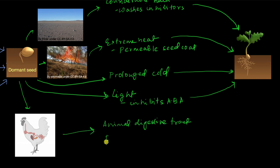So what happens in an animal digestive tract is enzymes digest the hard coat, and as you know, that will break the dormancy because hard coat was one of the things that was preventing the seed from germinating.